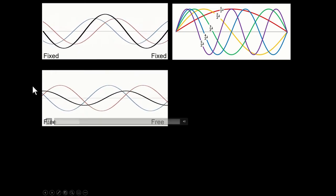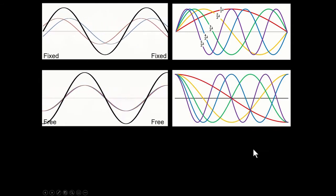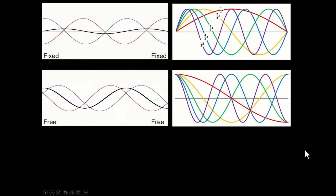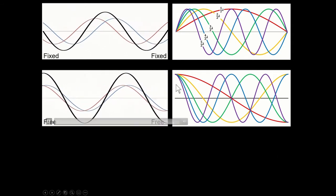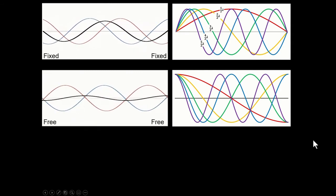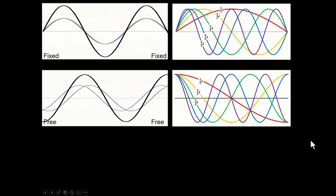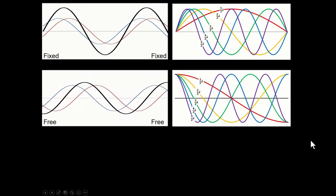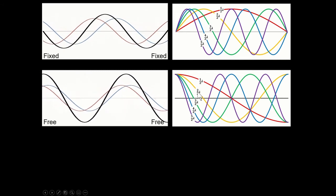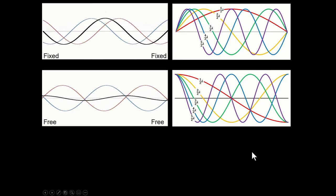If both ends are free, the wave has to start at an anti-node and end at an anti-node — this would be like a metal rod not held taut at the ends. As long as it starts and ends at an anti-node, it can have nodes in the middle, and the same wavelengths also fit: half a wavelength, two halves, three halves, four halves, five halves, and so on.